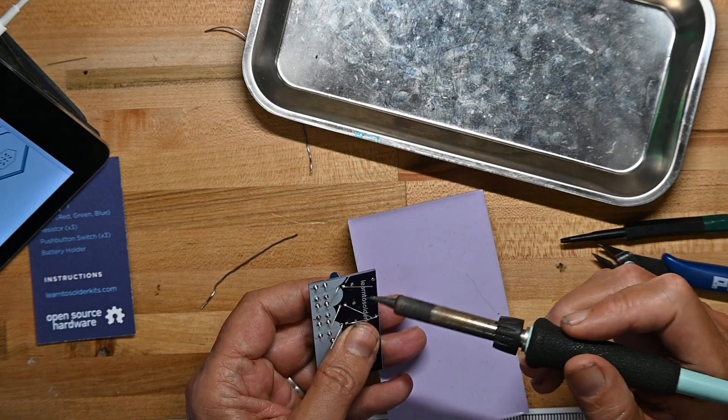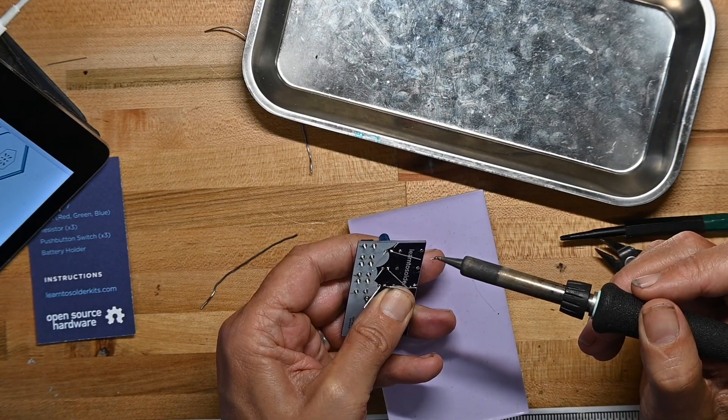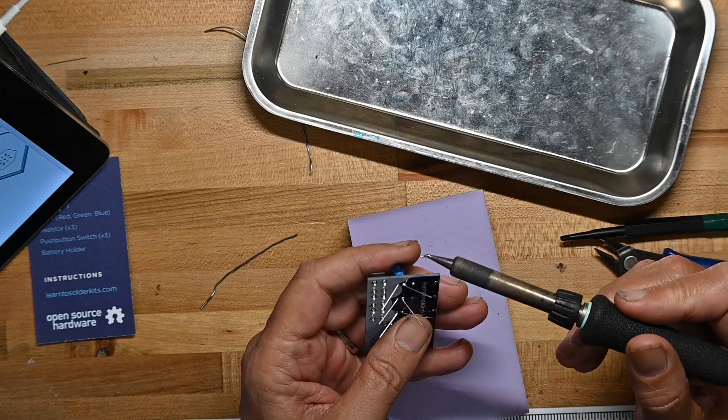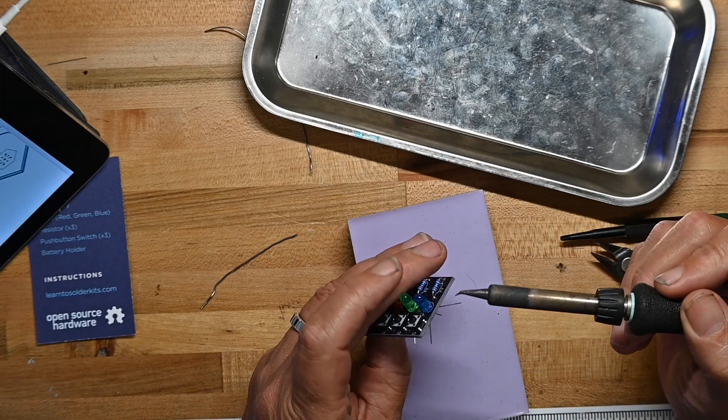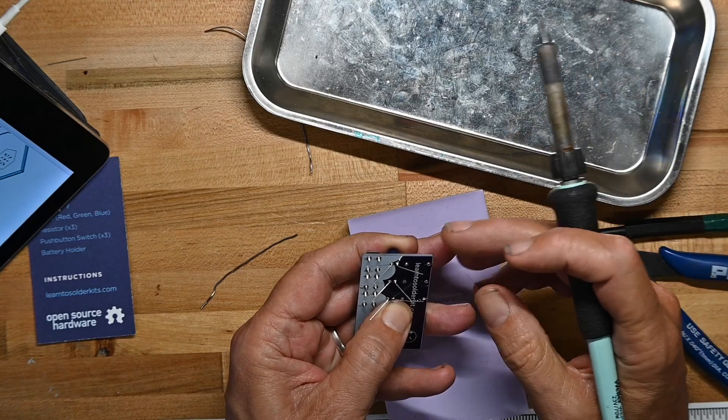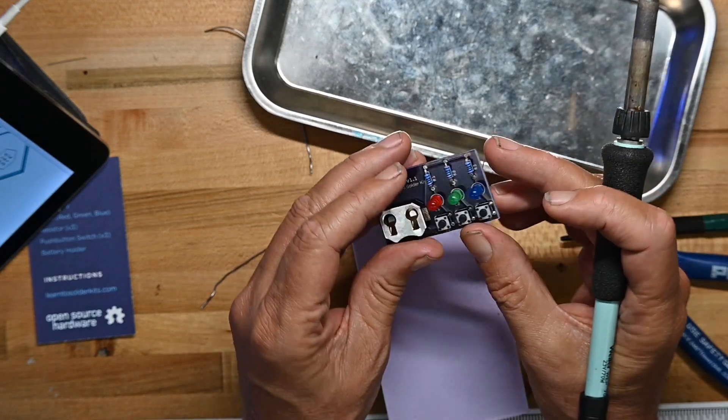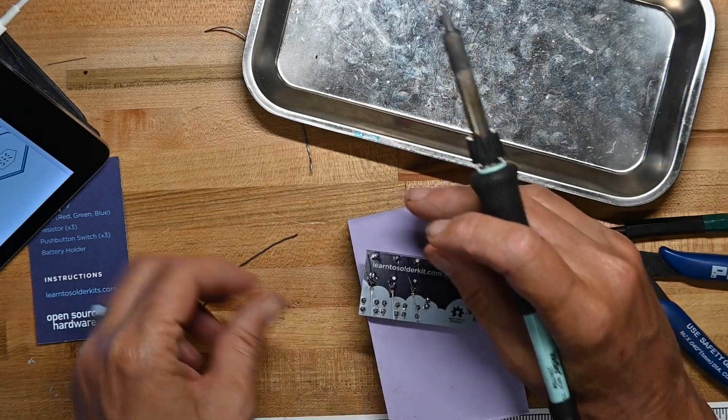Don't solder both legs, solder one leg and then adjust. That holds true for IC sockets, pin headers, power connectors, all kinds of things. It just makes your life easier. You're not trying to be perfect when you're soldering - the solder goes on and then you touch it up. You may have heard that click onto the board. Now they're all flat and I can do the other leg.